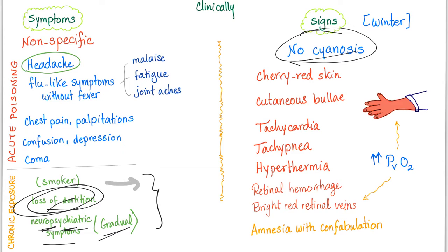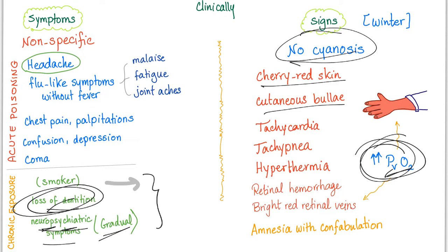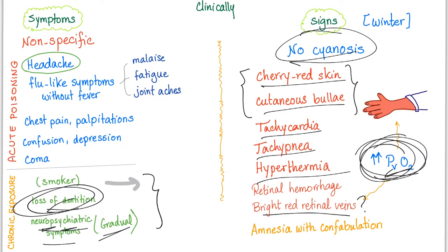Signs of CO poisoning: no cyanosis, because increased PVO2 means oxygen is going to the veins rather than the tissue. Cherry red skin and cutaneous bullae — both are significant findings, though uncommon. Tachycardia, tachypnea, and hyperthermia may be present. Retinal hemorrhage and bright red retinal veins are seen due to increased PVO2. Amnesia with confabulation is also noted.